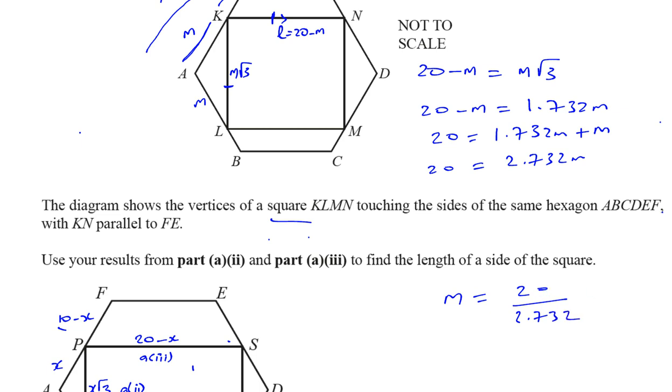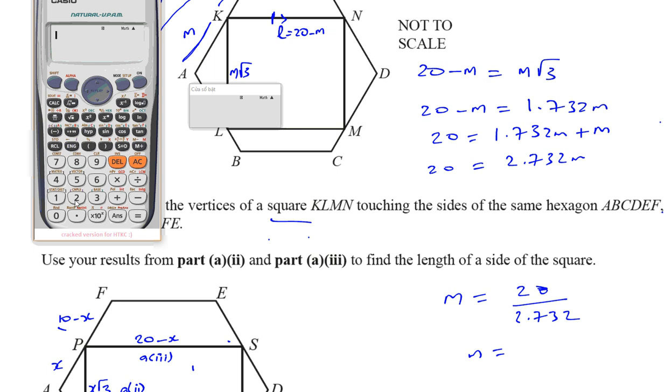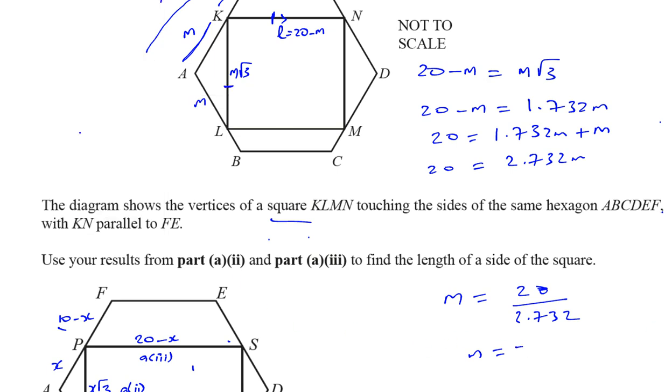Okay. Which should give us our answer. So we have 20 divided by 2.732. And that gives us an answer, which is 7.32 centimeters. There are 7.32 centimeters. So that is the length of, that's the size of M.